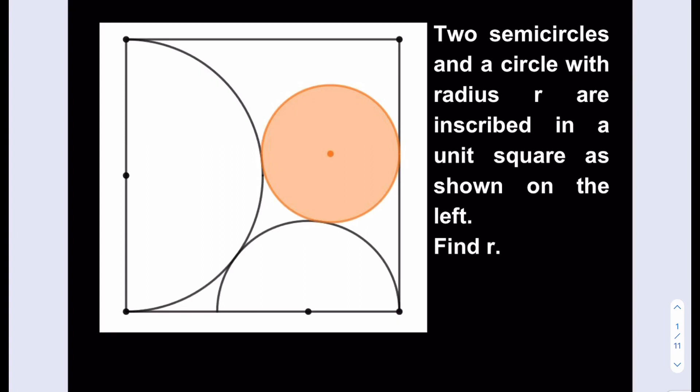So here's my strategy. First of all, I know that this is a unit square, so the side length is going to be 1. That means that these are going to be 1 half. I do not know the radius of the smaller semicircle — let's call that x. And I'm going to start by finding it first.